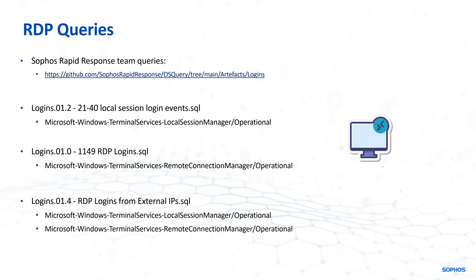Another really useful query — and we've discussed the dangers of exposing RDP to the internet in previous videos — is a query called RDP logins from external IPs. The name makes it pretty obvious: it looks for RDP connections from external IP addresses. This query actually looks in both of the previously mentioned event logs, and is something you should definitely run throughout your environment to identify if there are any RDP logins occurring from external IP addresses.